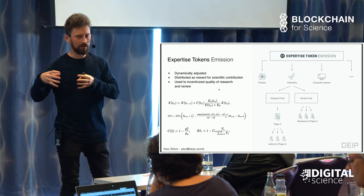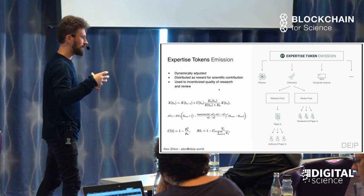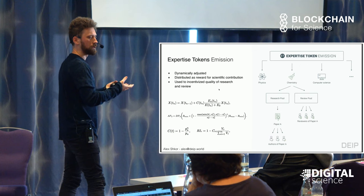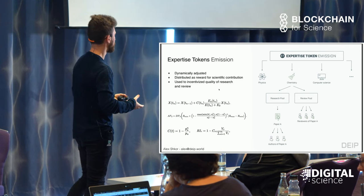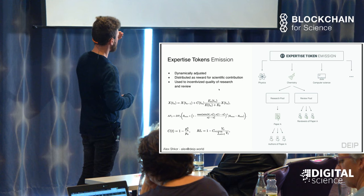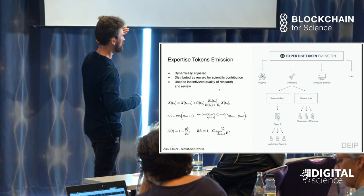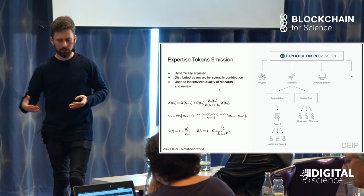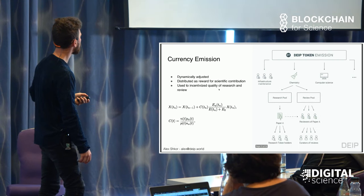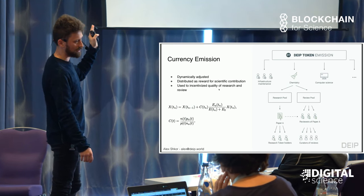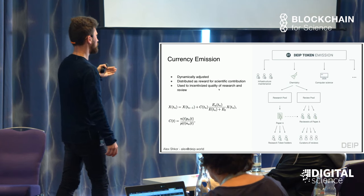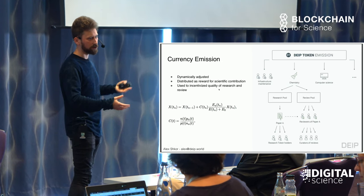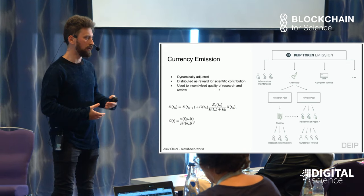If there is not enough review within a discipline, more expertise tokens will be allocated to the review pool to incentivize more review and quality within that discipline. And they are further distributed to researchers and reviewers as recognition reward, as a reputational reward. Similarly, there is emission of internal currency, which is distributed as a financial reward — a basic income for scientists and reviewers.